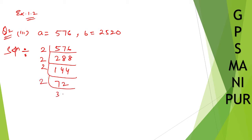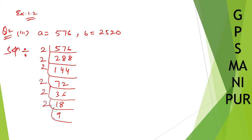2 into 3 is 6, 2 into 4 is 12, 2 into 6 is 12. Again divide by 2 — 2 into 8 is 16, again divide by 2 — 2 into 9 is 18. Now divide by 3 — 3 into 9.